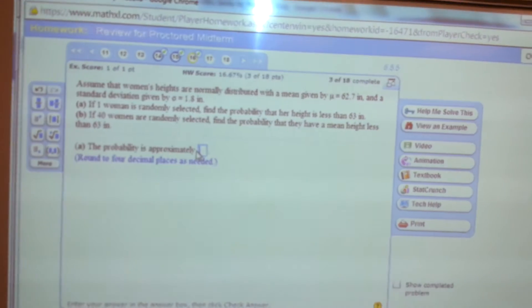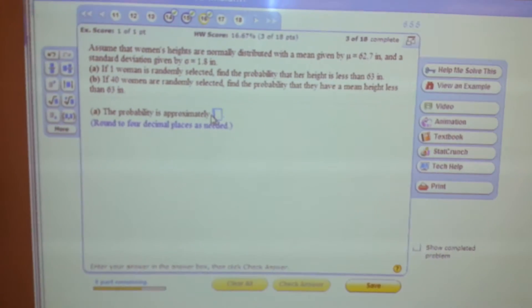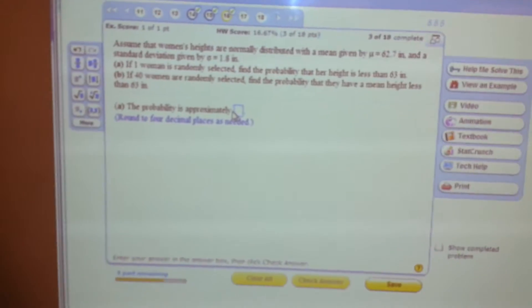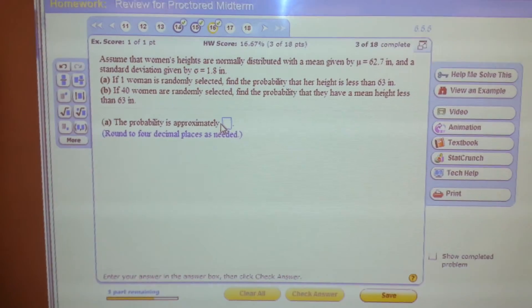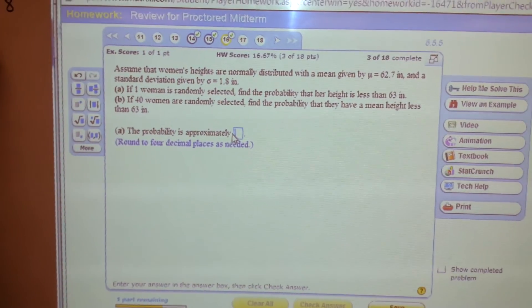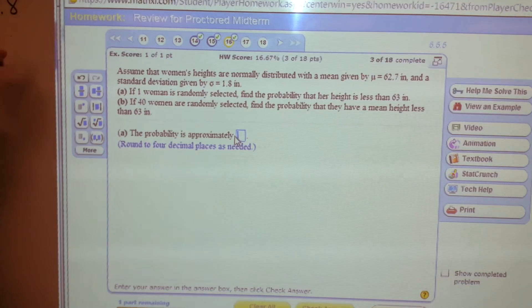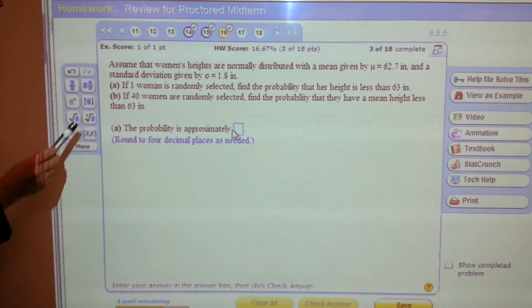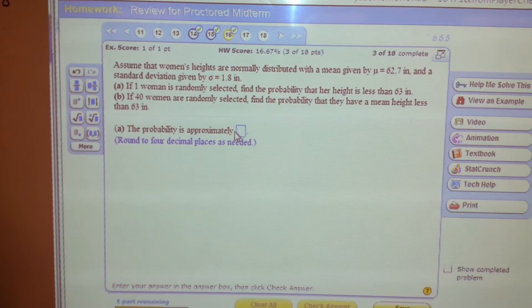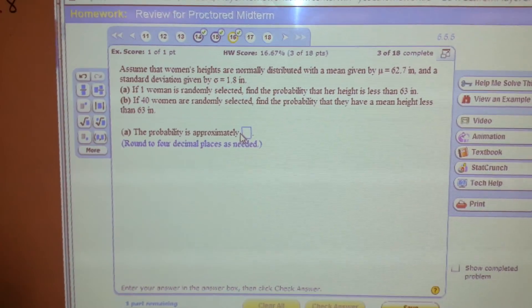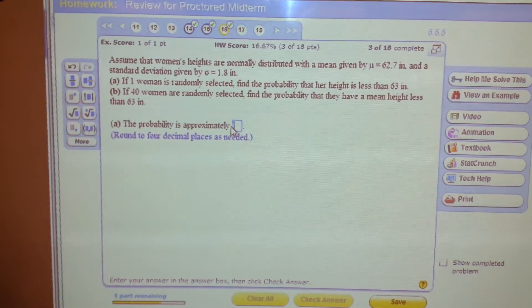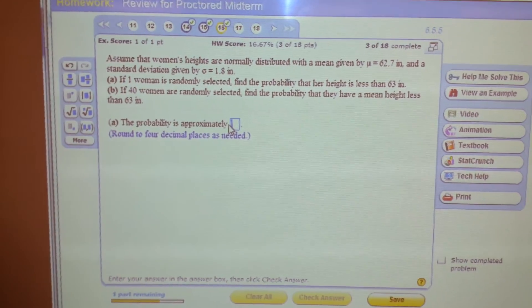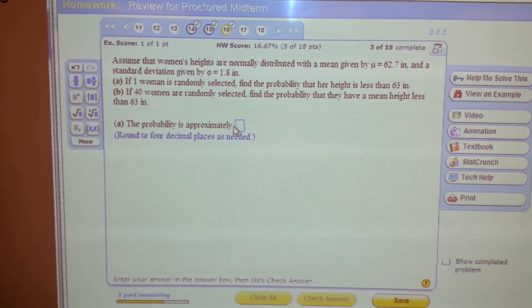Assume that women's heights are normally distributed with a mean given by 62.7 and a standard deviation of 1.8. The difference between problems A and B: in A just one person is being selected, whereas in B it's a sample of 40 women. So in part B we're going to have to use the central limit theorem. But let's do part A first.